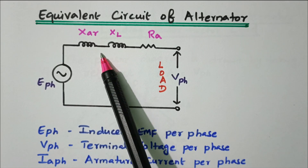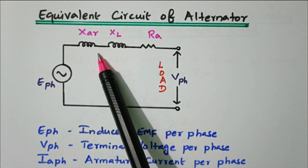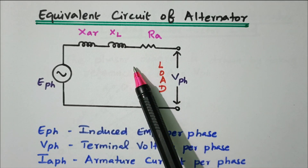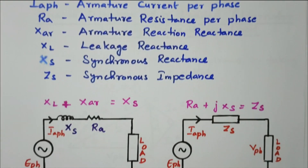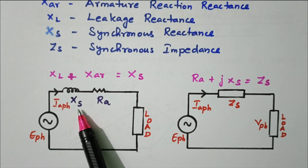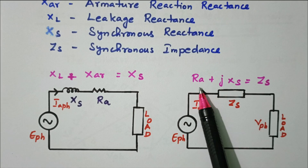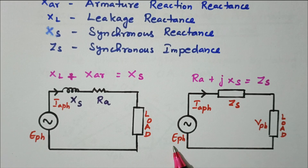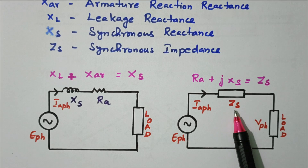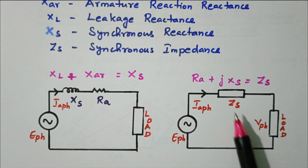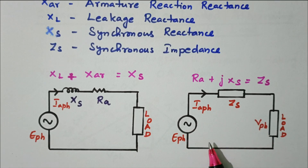XL and XAR can be combined together; that is called XS, the synchronous reactance. Then the reactance and resistance can be added together to give synchronous impedance ZS. Our aim in the phasor diagram is to show that E_phase is the vector sum of the drop across the armature reactance and V_phase — that is, E_phase equals V_phase plus IA·ZS. That is our main aim to prove in the phasor diagram.